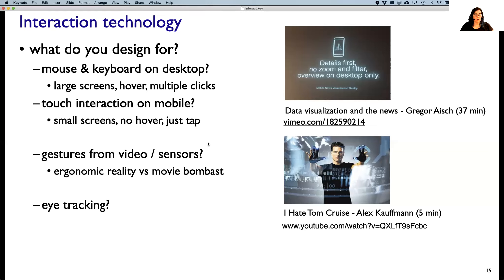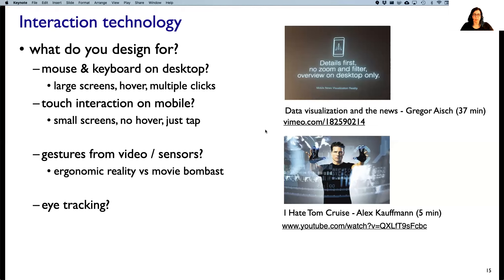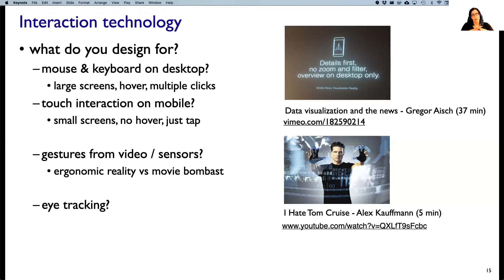Video is getting to be pretty cheap, ubiquitous, and powerful, and there is a lot of image processing and video processing that can be used for interaction — something to think about in a visualization context. Another thing that's getting cheaper and more widespread is eye tracking. There are challenges with fine-grained control with that. Although we'll focus in this class mostly on desktop contexts, keep in mind that there are different modalities, and some of you might want to do something that works on mobile for your final projects.